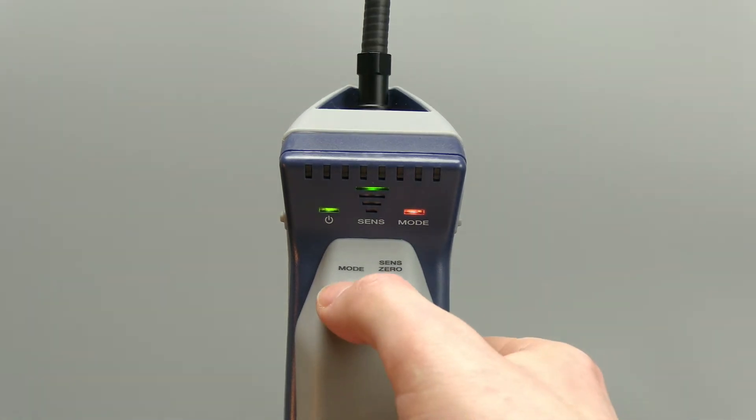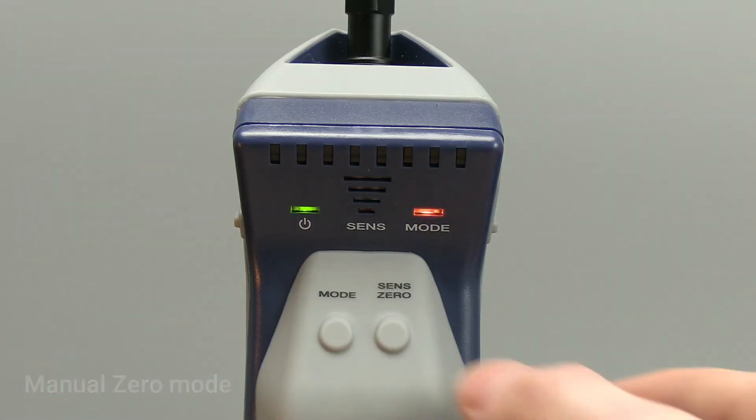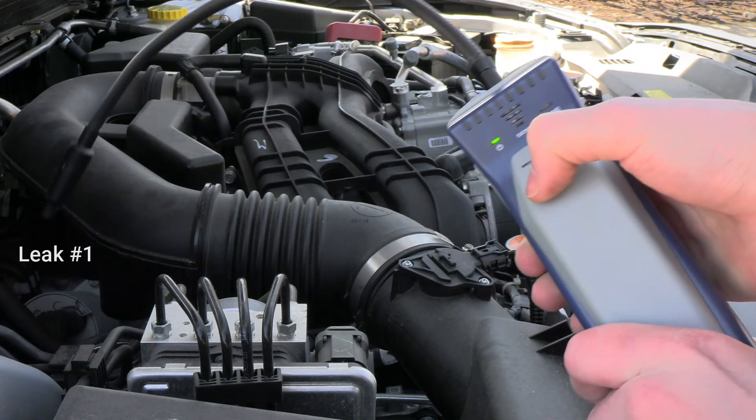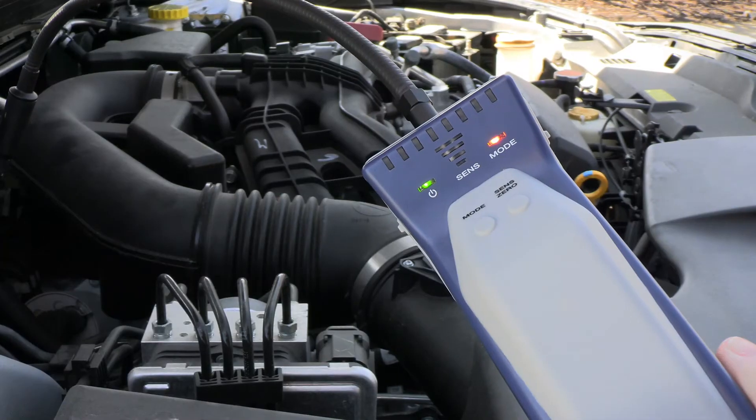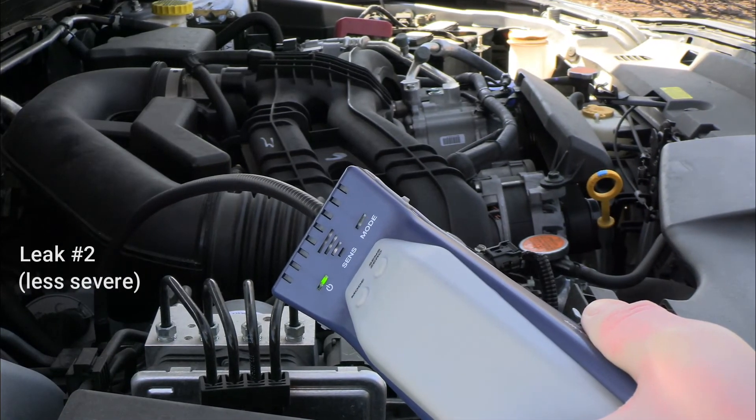In manual zero mode AST 200 IR will only zero to the background refrigerant by pressing the sense zero button. The sense indicators flash briefly to indicate a new zero point has been set. Zeroing sets a new baseline so AST 200 IR will not alarm on a smaller leak size. This can be useful when you have more than one leak and you'd like to identify which leak is larger.